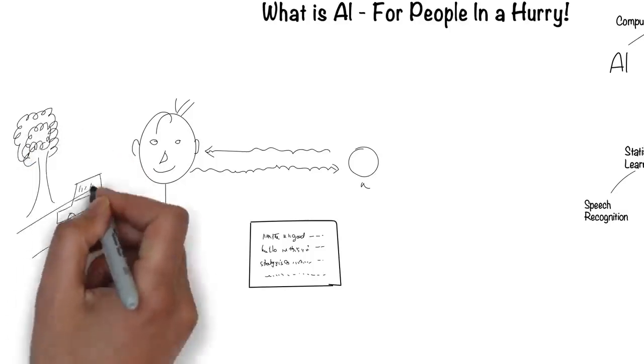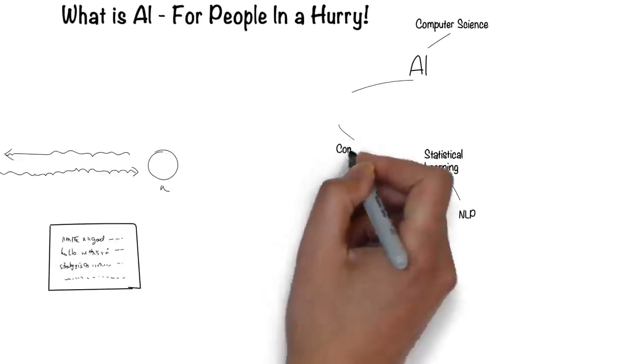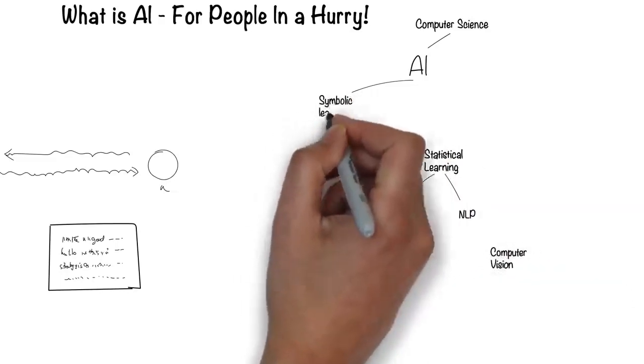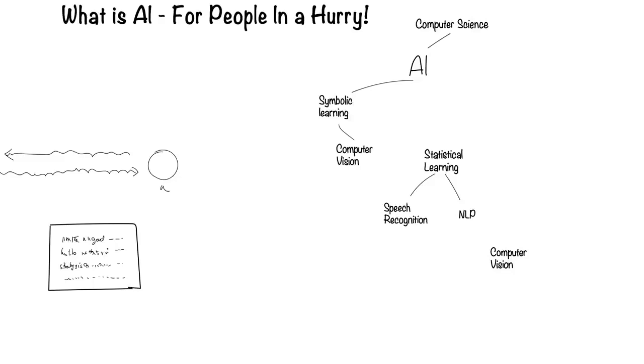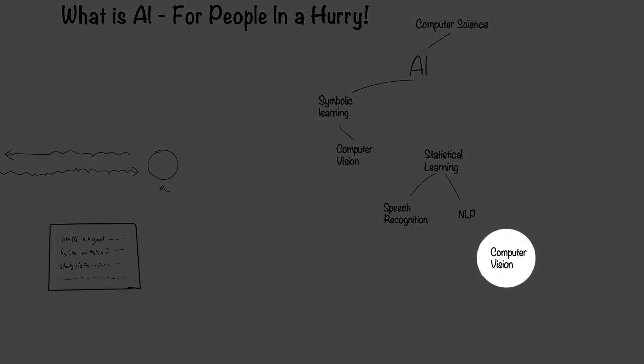Humans can see with their eyes and process what they see. This is the field of computer vision. Computer vision falls under the symbolic way for computers to process information. Recently, there's been another way, which I'll come to later.